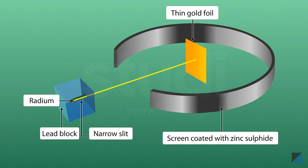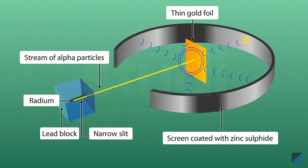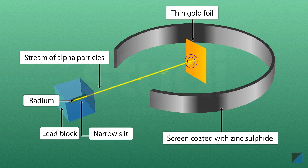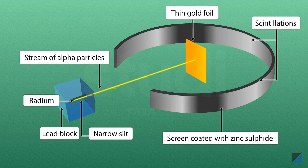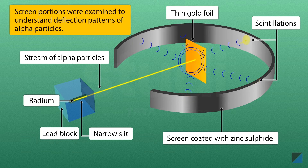A moveable circular screen coated with zinc sulfide was placed around the gold foil. The alpha particles produced by the radium escaped through the slit, struck the gold foil and got scattered. The scattered alpha particles were detected by the zinc sulfide screen in the form of light flashes or scintillations. Different portions of the screen were then examined to determine the deflection pattern of the alpha particles.